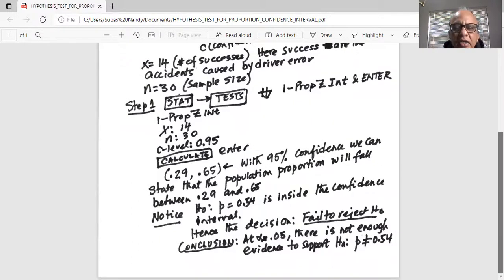So if we fail to reject H0, then our conclusion is at alpha equal to 0.05, there is not enough evidence to support the alternate p not equal to 0.54.